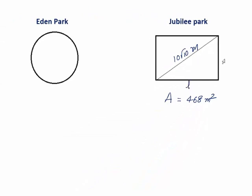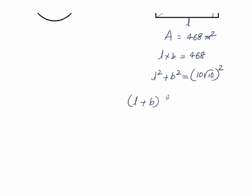Now let the length be L and the breadth be B. Using this we can understand that L into B which makes 468. As well using this Pythagoras theorem we can say L square plus B square must be 10 root 10 whole square. Now we have identity A plus B whole square is A square plus B square plus 2 into AB.